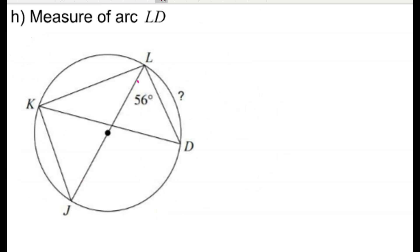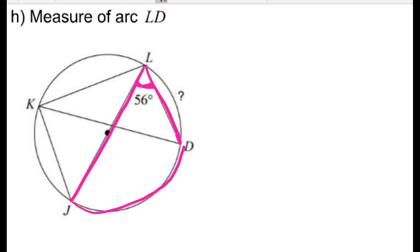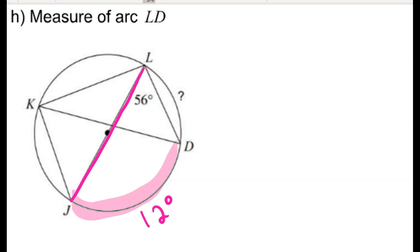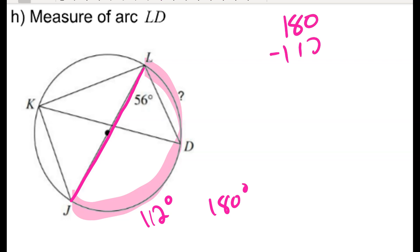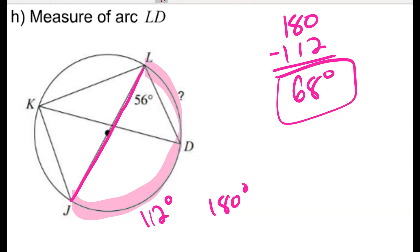For problem H, I have an inscribed angle JLD of 56 degrees and want arc LD. Doubling 56 gives arc JD as 112 degrees. JL is a diameter, so arc J to L is 180 degrees. Subtracting 112 from 180 gives the missing arc LD as 68 degrees.